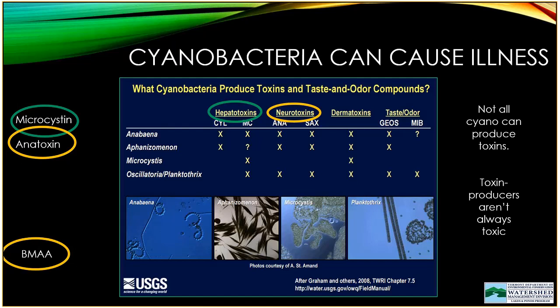There are several groups of compounds that cyanobacteria can produce that may cause illness. Across the top of this USGS slide, you can see four groups: the first is hepatotoxins, which affect the liver. The most common one is microcystin, and we do detect microcystin in Vermont every year, usually on Lake Champlain but occasionally on other lakes as well. The neurotoxins are compounds that can affect nerve activity. We do not find them as often in Vermont, but we do have occasional detections of anatoxin.